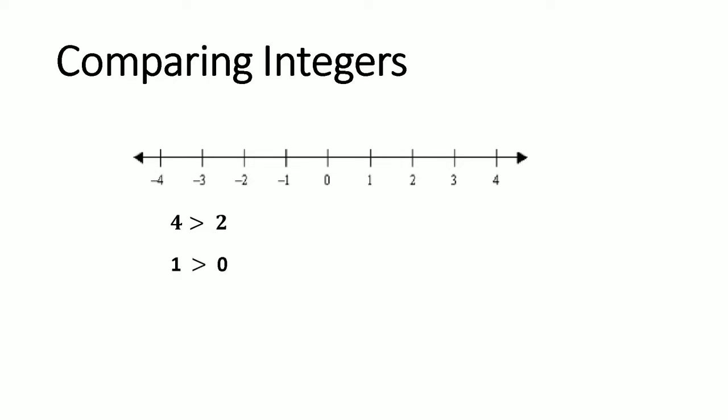If you compare 1 and 0, then 1 is greater than 0 because 1 is to the right of 0. Similarly, 0 is greater than negative 2 because 0 is to the right of negative 2. Can you see why negative 2 is greater than negative 4? If you said that negative 2 is to the right of negative 4, you are correct.